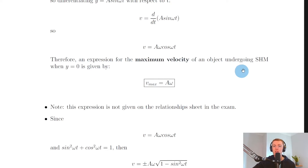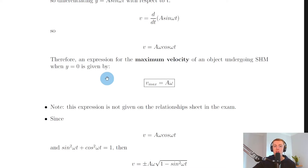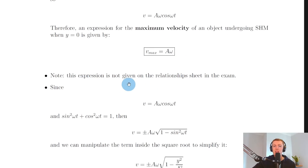An expression for the maximum velocity of an object undergoing SHM when y equals zero is given by v_max equals aω. That is when the object is at its equilibrium position. Substituting t equals zero — the initial condition — cosine of zero gives one, so we get the maximum velocity expression v_max equals aω. Note that this expression is not given on the relationship sheet in the exam, so it's helpful to remember it or to derive it by starting with y equals a sin(ωt) and differentiating once with respect to time.